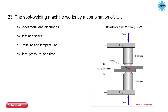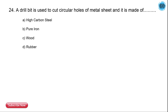The 22nd question is: the spot welding machine works by a combination of what? The options are sheet metal and electrode, heat and spark, pressure and temperature, and heat pressure and time. The correct answer is heat, pressure, and time.